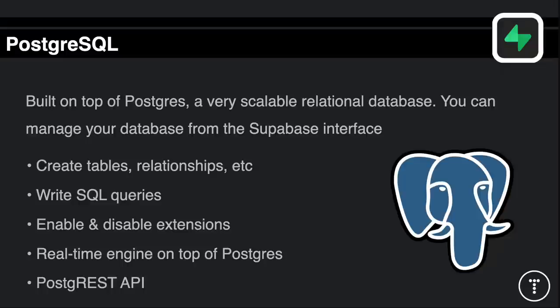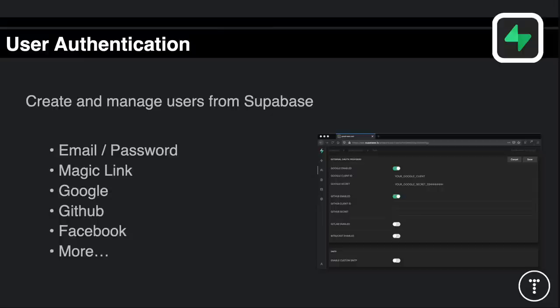As far as the database goes, it actually sits on top of a Postgres database which is a very scalable relational database. You can log into the Supabase control area, create your tables and fields, manage users and policies, and write custom SQL queries. Another really cool thing about Supabase is it uses something called PostgREST, which will take your Postgres database with all your tables and columns and automatically generate a REST API with filtering, sorting, and all types of stuff. You can also access your data through the JavaScript client library.